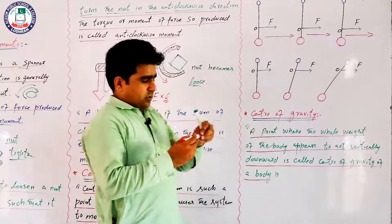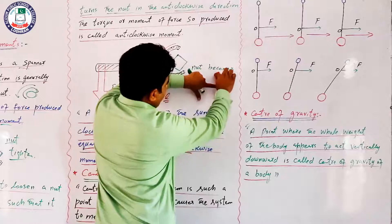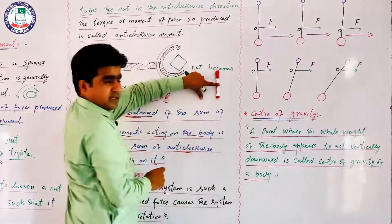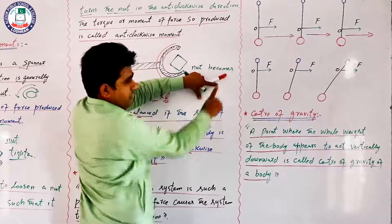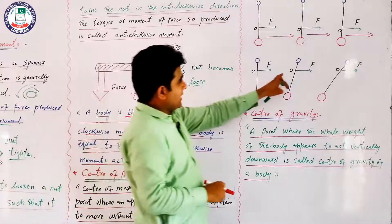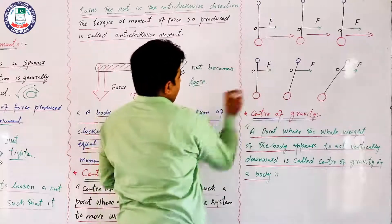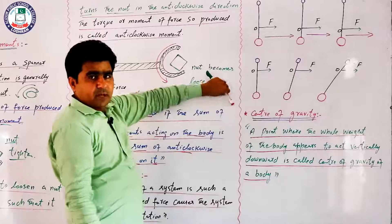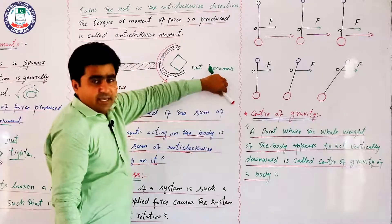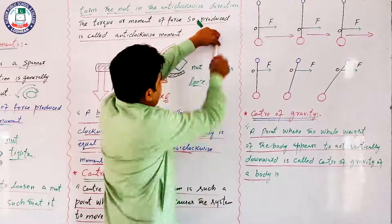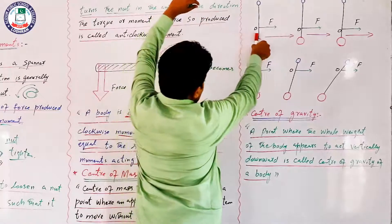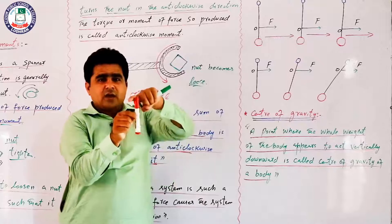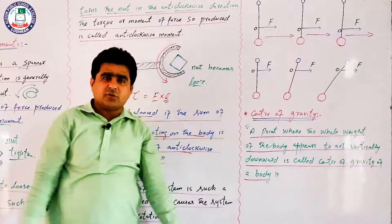Center of mass के अलावा किसी और point पर force लगाएं — जैसे उपर — तो rotation पैदा होती है। जहां center of mass था वहाँ finger रखी हुई है; उससे हटकर force लगाने पर body में turn पैदा होता है। लेकिन center of mass पर force लगाएं तो body straight forward move करेगी without rotating। Up and down movement का मतलब है body rotate कर रही है।